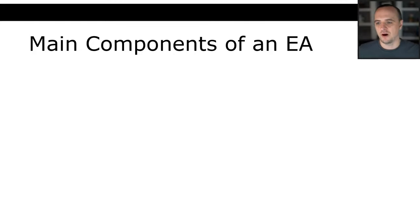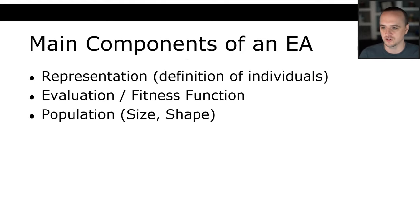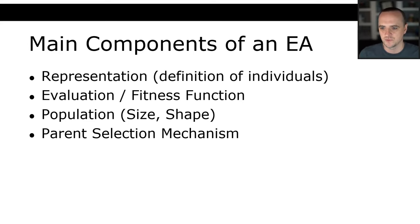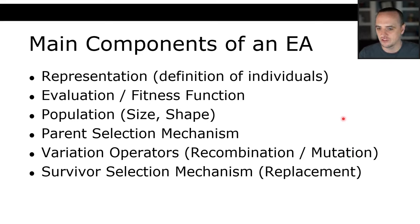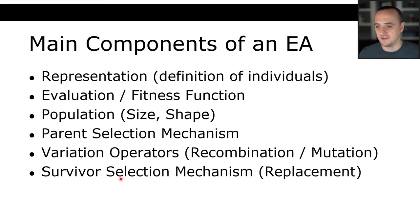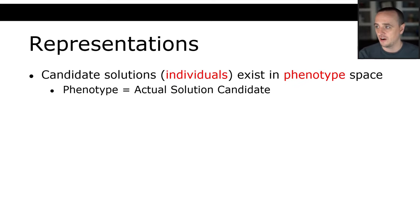The main components of any evolutionary algorithm are: the representation — how we define individuals; the evaluation or fitness function; the population size and structure; the parent selection mechanism — how we select which individuals reproduce; the variation operators — how we combine parents or apply mutations; and the survivor selection mechanism. These components and how we define them represent the parameters for our algorithm.